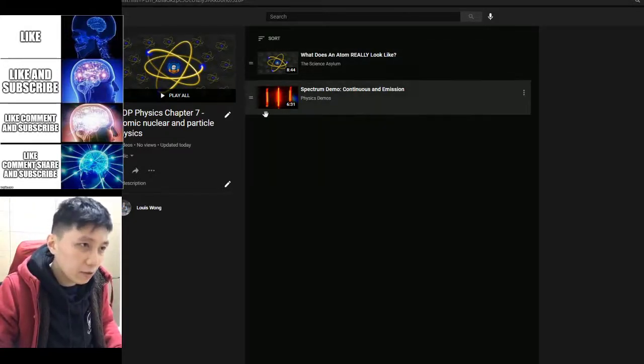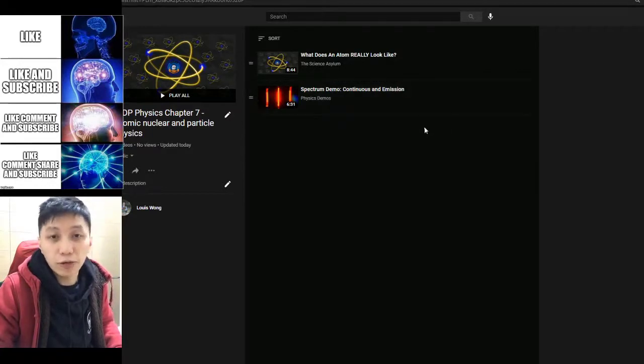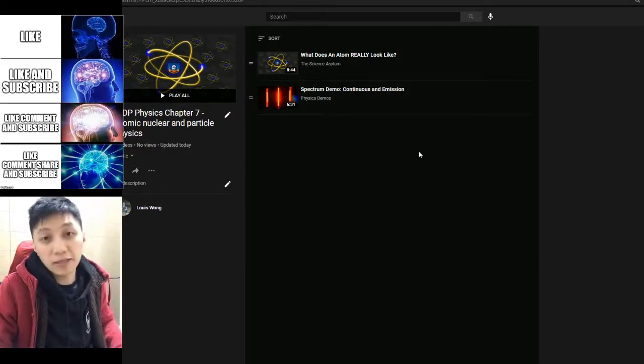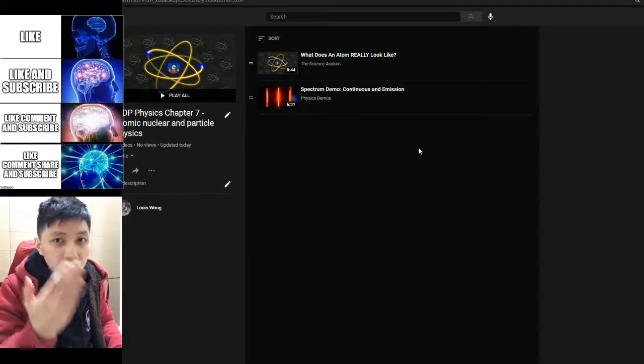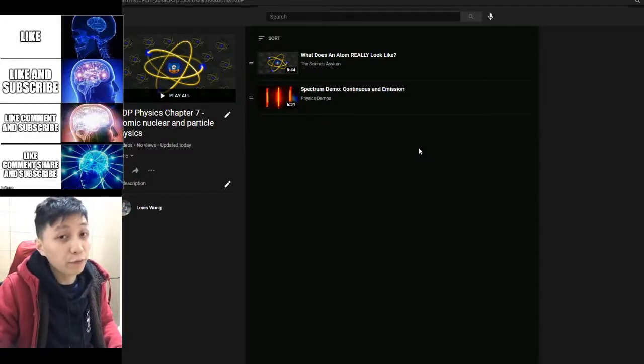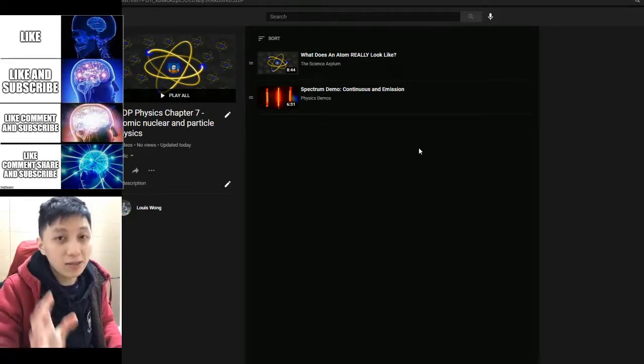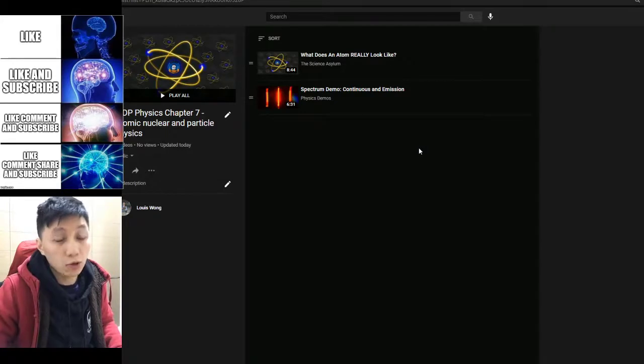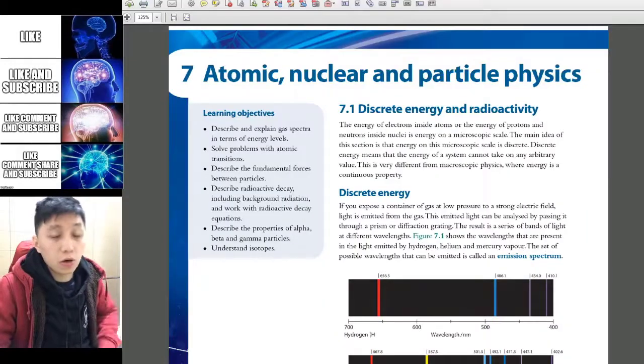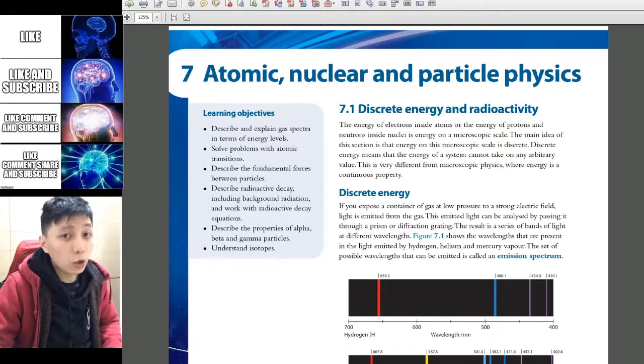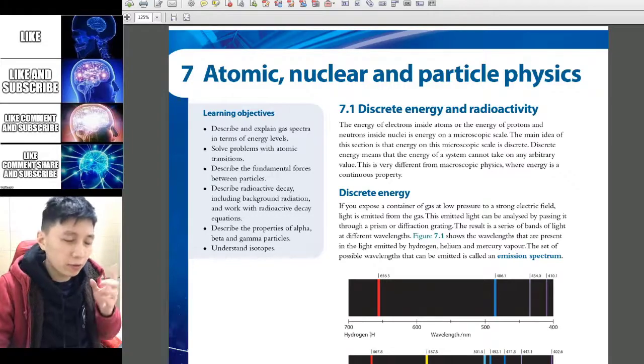As for this second video, it is an experiment demonstration on how we can make the emission spectrum and when you see it, how it would look like. It is very important to make this observation because this is the reason why the scientists in the past proposed this radical model, which the energy level is discrete. By the end of this video, I hope you know how to do some basic calculations on discrete energy.